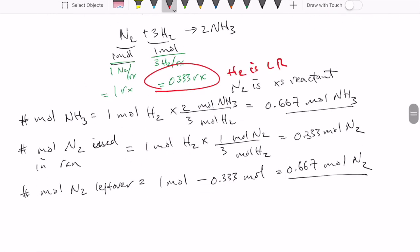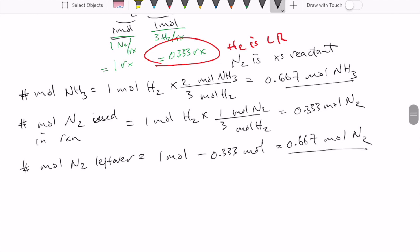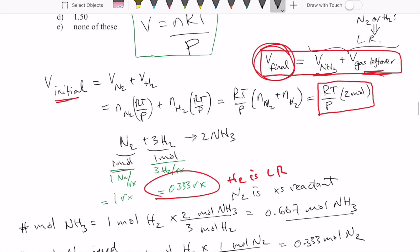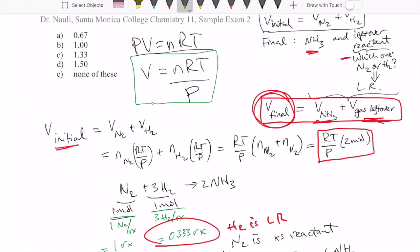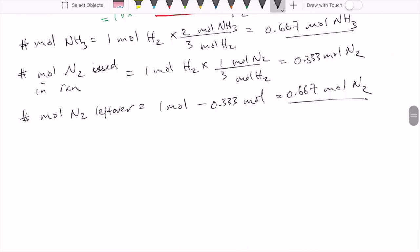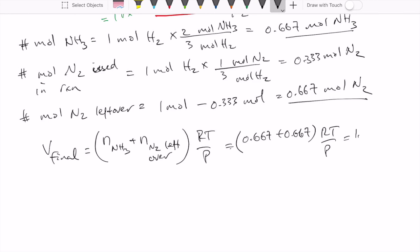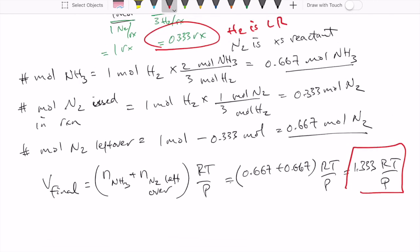What we need to do is then add those two number moles together and then multiply it by RT over P. So we would calculate our volume final being number moles of NH3 plus N2 that's left over, and then times RT over P. And this is just adding 0.667 with 0.667 and then RT over P, and that gives you 1.333 RT over P. This is our final volume.